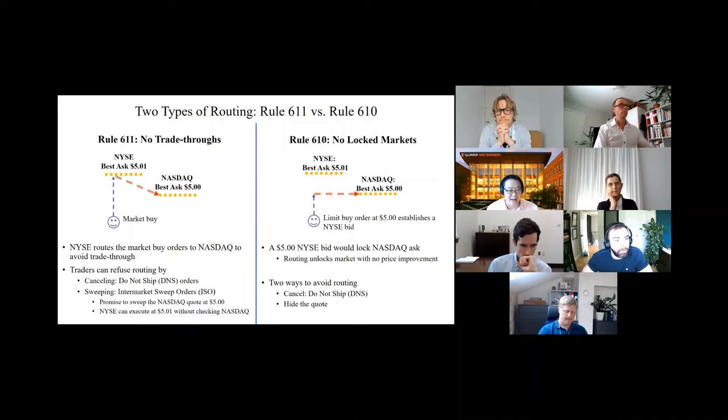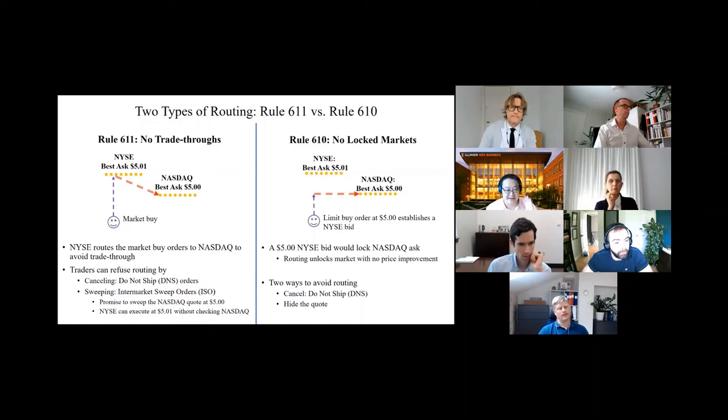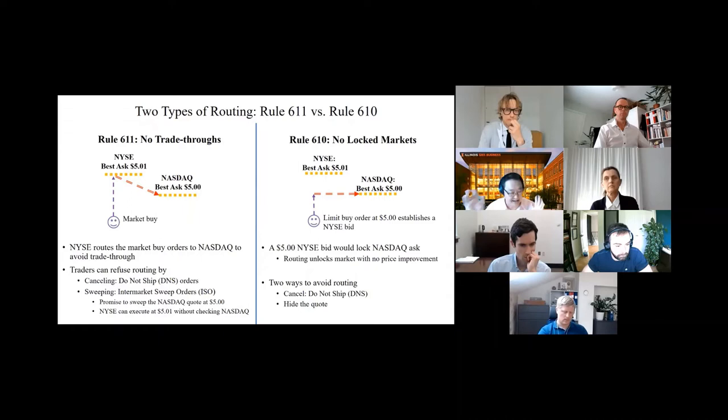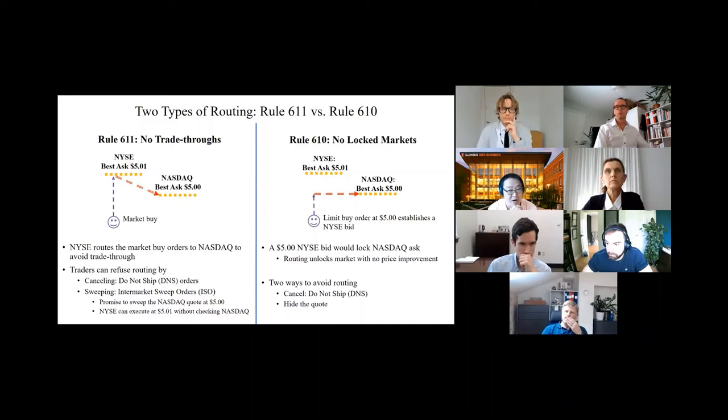Surprisingly, traders can refuse routing in two ways. First, you can cancel your order. You need to add something called do not ship tag, DNS orders. The other is an aggressive approach called swiping. You can use intermarket sweep orders or ISO orders. You basically tell New York Stock Exchange, I will take care of the best ask at NASDAQ at $5, I will sweep that. In that case, NYSE does not need to worry about best quotes on other exchanges and can execute the order at $5.01.